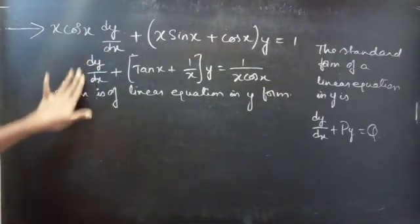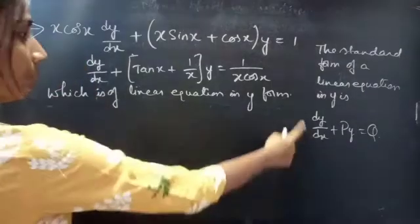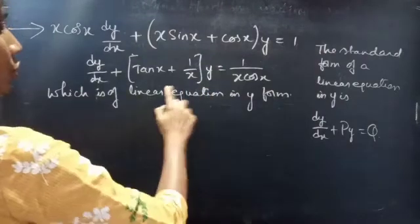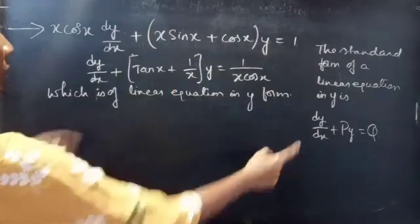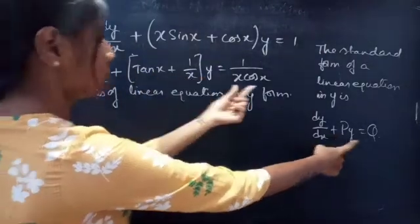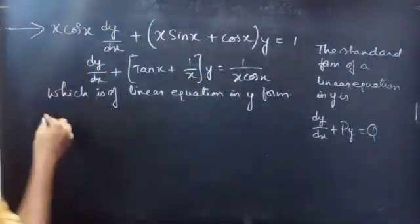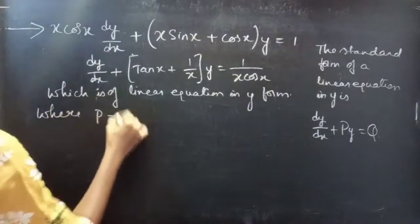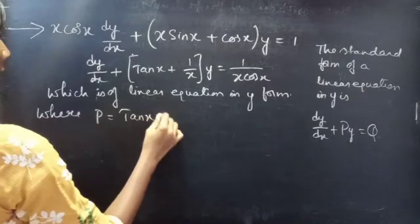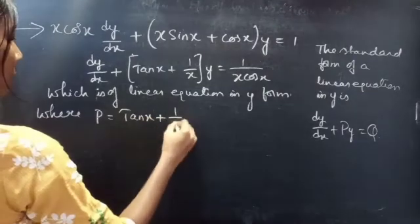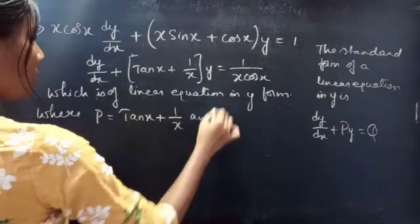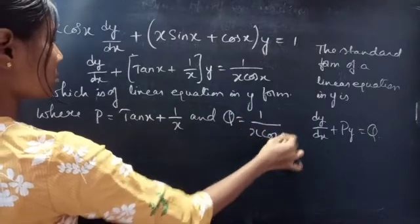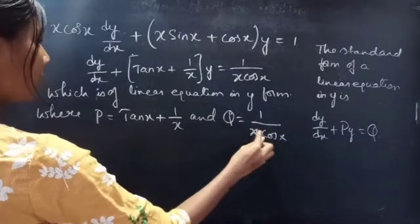Now by comparing with the standard form dy/dx + P·y = Q, we get P = tan(x) + 1/x and Q = 1/(x·cos(x)). Here P and Q are functions of x.